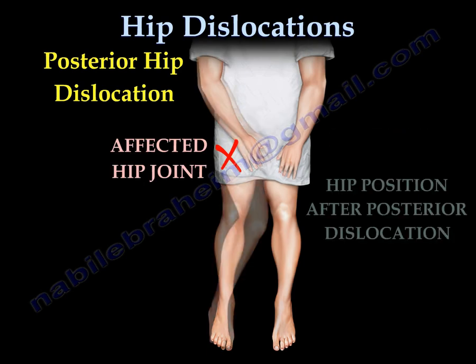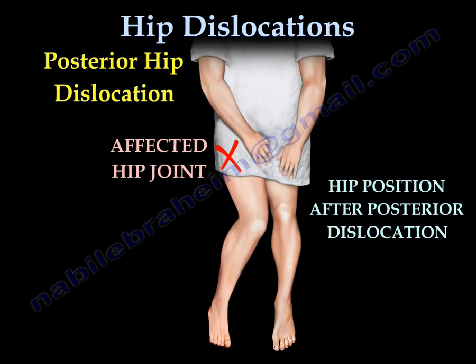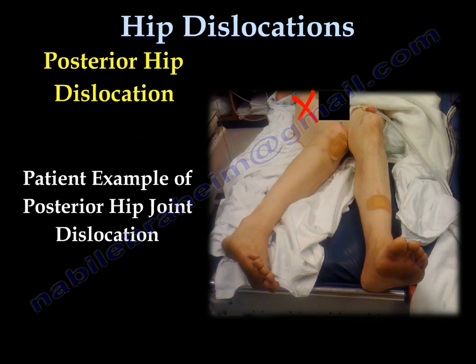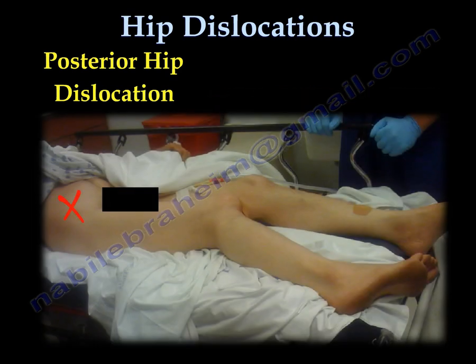Here is the normal position of the hip, and here is the position of the extremity after posterior dislocation. Here is a patient with posterior dislocation of the hip — you can see the internal rotation of the right lower extremity.